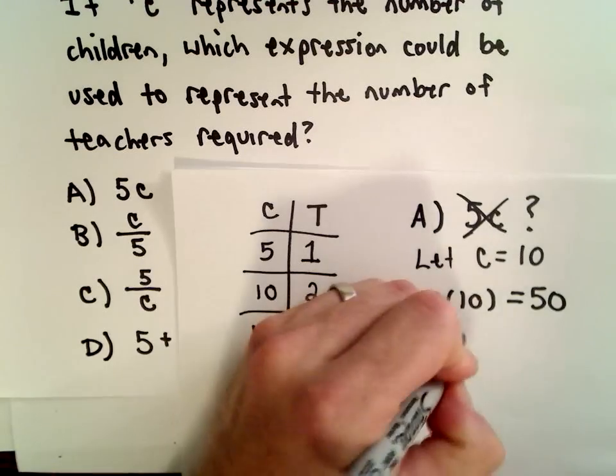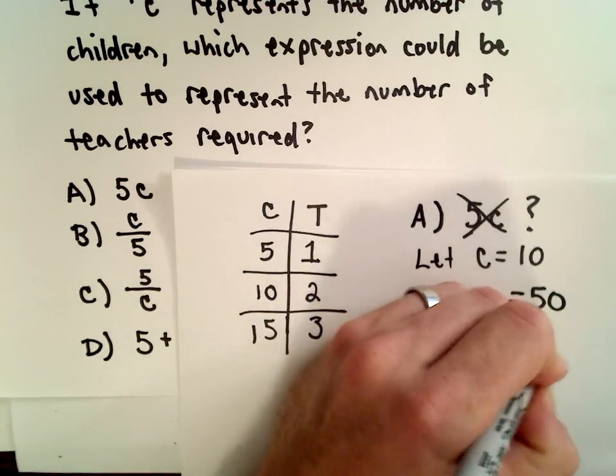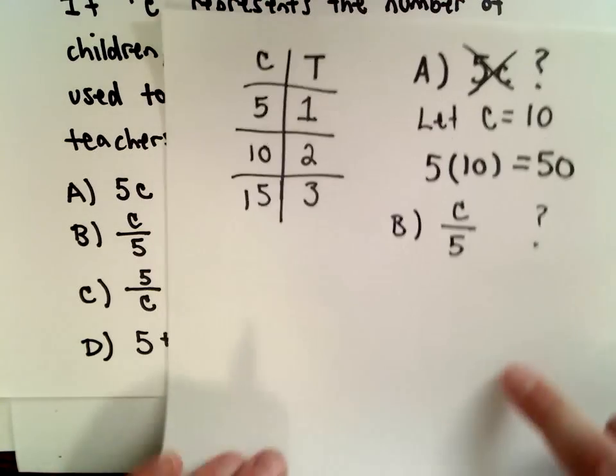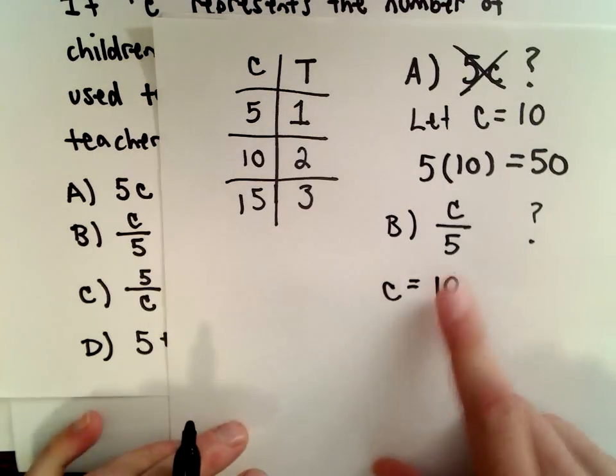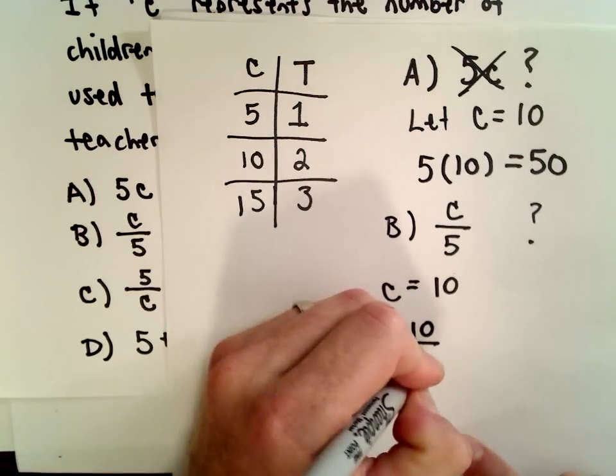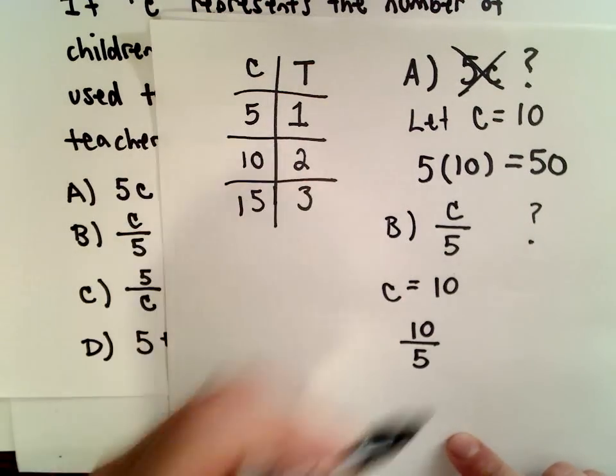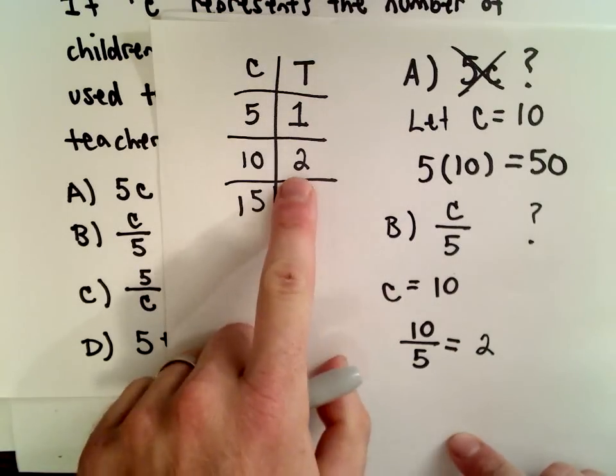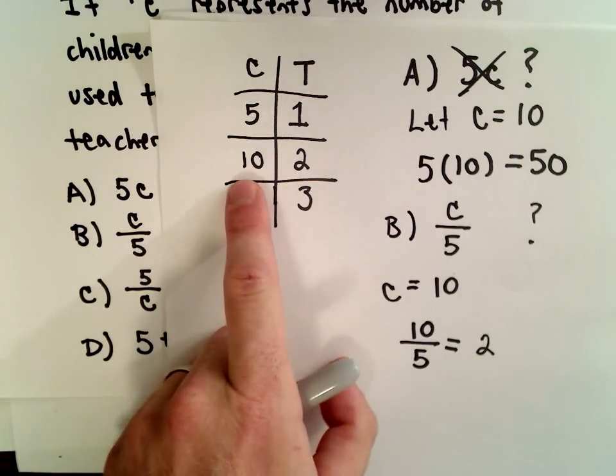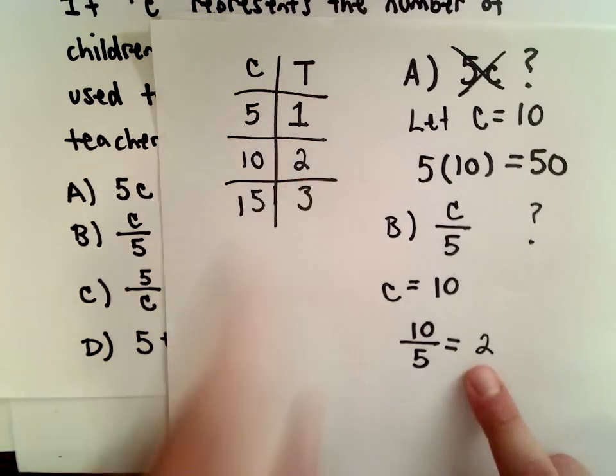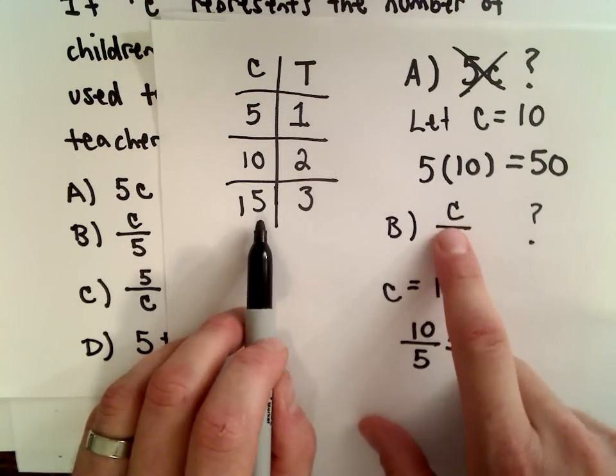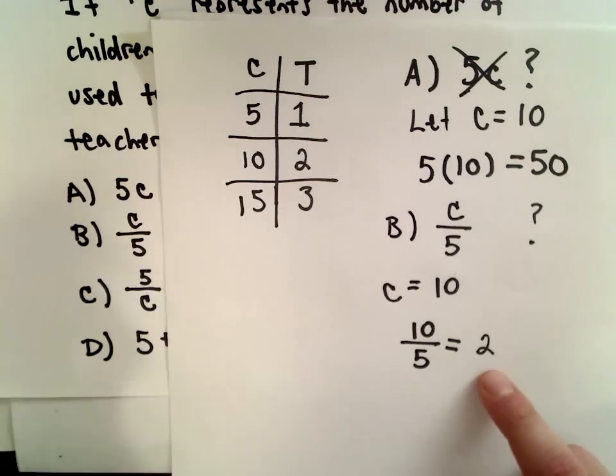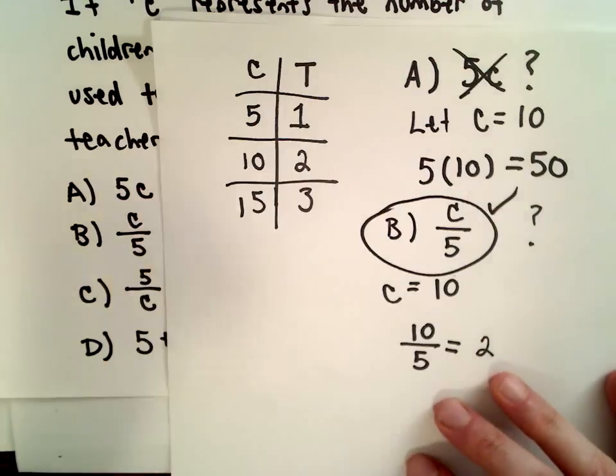Part B says the number of children divided by five. Is this correct? Let C equal ten. Our expression gives ten divided by five, which equals two. That's what we said—if you have ten children, you need two teachers, and that's the value we're getting. Likewise, if we put in fifteen for C, we have fifteen divided by five, which is three. That's how many teachers we need. B looks like the correct answer.